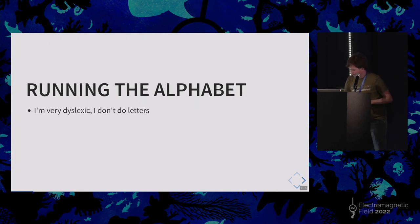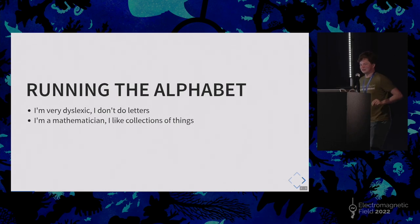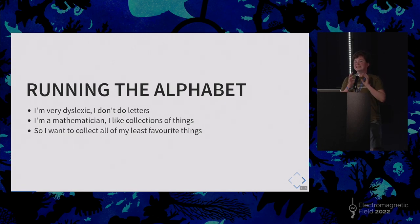And what I'm trying to do is I'm trying to run the alphabet, and it's exactly what it sounds like. I want to go to 26 Parkruns, each of them start with a different letter of the alphabet. I'm doing very well at the moment, I've been to three. So I'm very dyslexic, I don't really do letters. I'm a mathematician, I really like collecting things. So I want to collect all of my least favourite things. I'm a masochist.